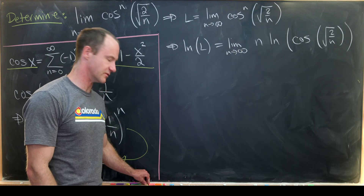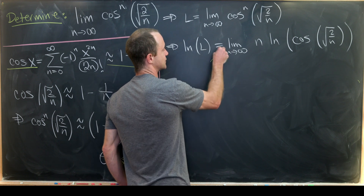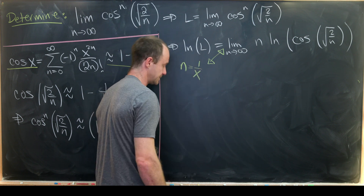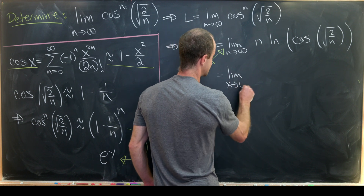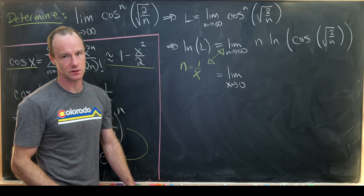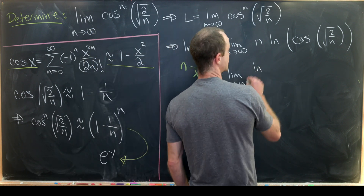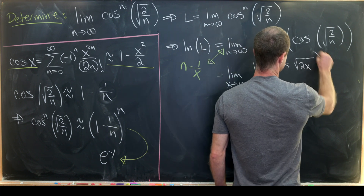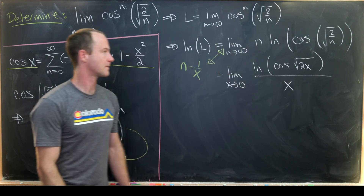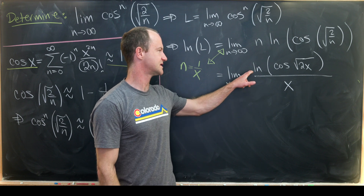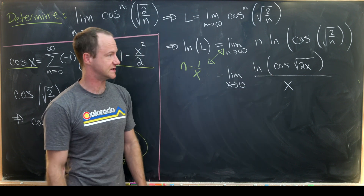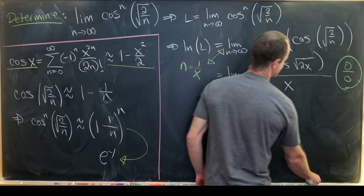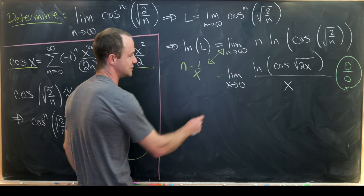From here we'll do a change of variables to make the limit work out a little bit nicer. We replace n with 1 over x, which gives us the limit as x goes to 0 — since as n goes to infinity, x clearly goes to 0. That gives us the natural log of cosine of the square root of 2x, all over x. As x approaches 0, the numerator approaches the natural log of 1, which is 0, and the denominator also approaches 0. So this is an indeterminate form of type 0 over 0, which means we can use L'Hôpital's rule.